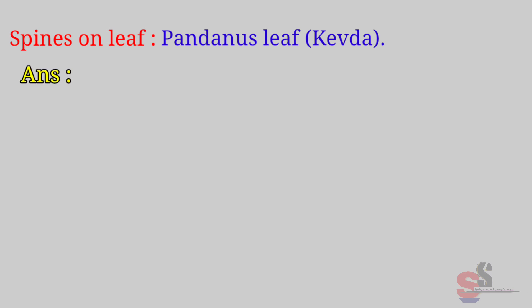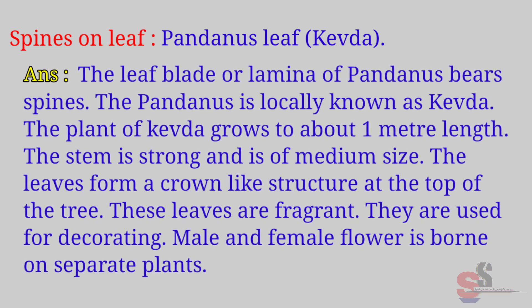Spines on leaf — Pandanus leaf (Kevda). Answer: The leaf blade or lamina of Pandanus bears spines. The Pandanus is locally known as Kevda. The plant grows to about 1 meter in length. The stem is strong and of medium size. The leaves form a crown-like structure at the top of the tree. These leaves are fragrant and are used for decorating. Male and female flowers are borne on separate plants.